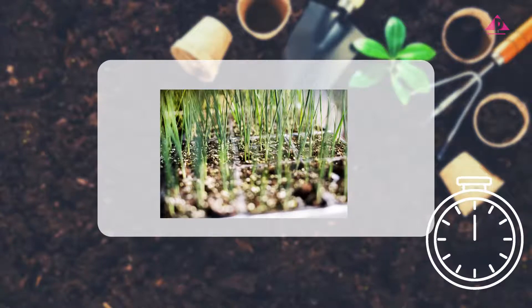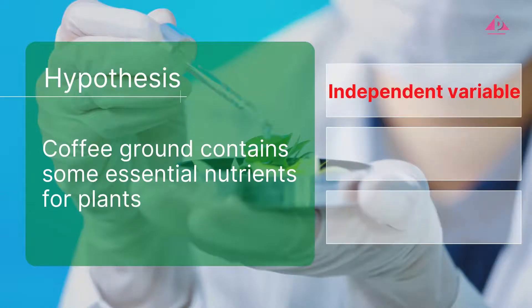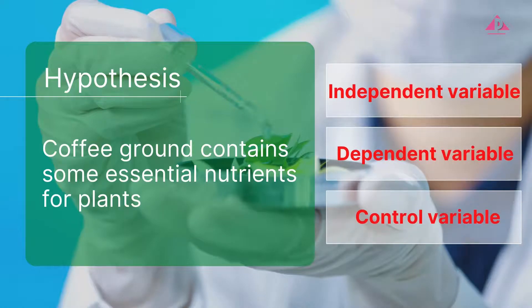The hypothesis is, coffee ground contains some essential nutrients for plants. Then we need to design an experiment to test the hypothesis. We need to consider the independent variable, dependent variable, and control variables when we design the experiment. Let's have a quick recap on the definition of these three variables.